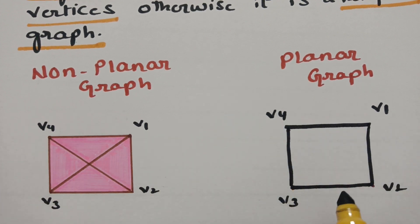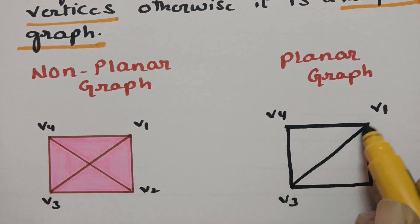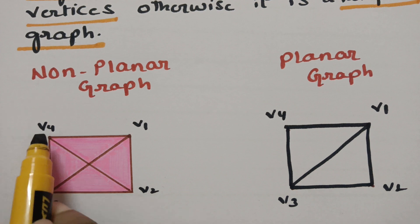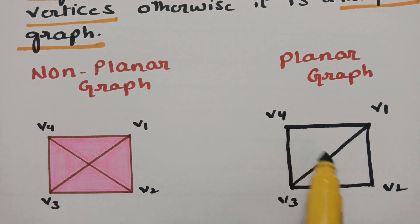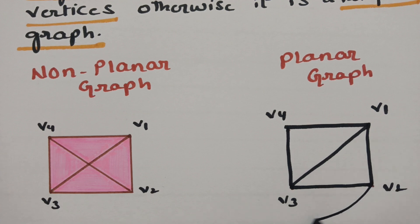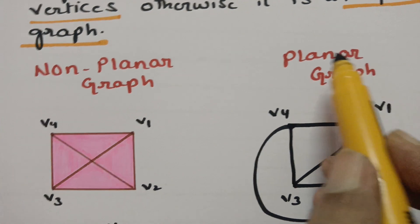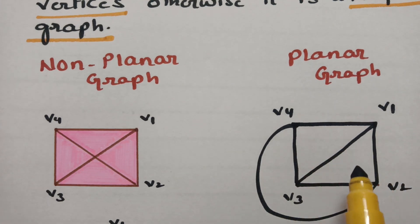There is no edge crossing. The edge V2 to V4 — if I draw it directly there will be edge crossing, so I am drawing it without edge crossing. Now this graph became a planar graph. Planar graph means there shouldn't be any edge crossing.